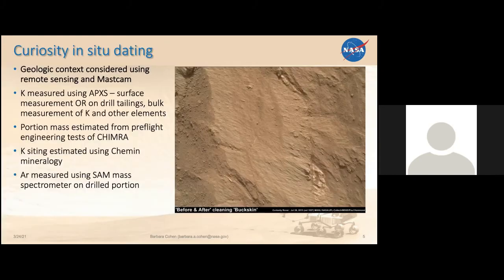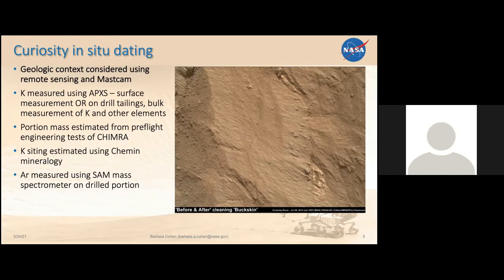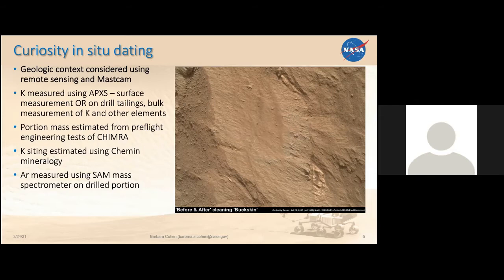Let me walk you through how we did the in-situ dating experiments. First, you have to understand the lithology — none of us would go pick up a rock and just chuck it in a mass spectrometer. You have to understand the rock, understand the mineralogy, and pose the question: what is the geologic event you're trying to date and what will that isotopic ratio yield for you? For Curiosity, we have a whole suite of remote sensing from orbit and MastCam. We could see the textures of the rock after using the dust removal tool to clear it off.